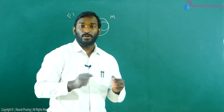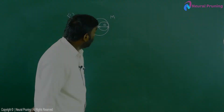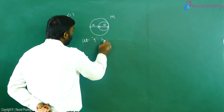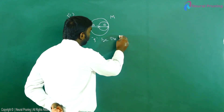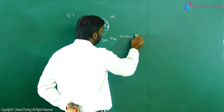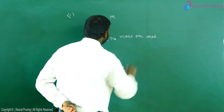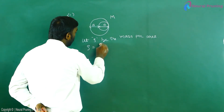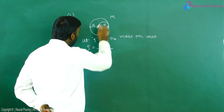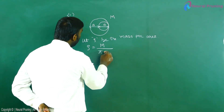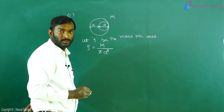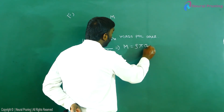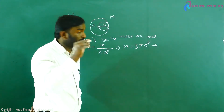To solve this problem, let rho (ρ) be the mass per unit area. So rho equals mass of the entire circle m divided by area of the circle πa². Therefore m = ρπa². This is equation number one.